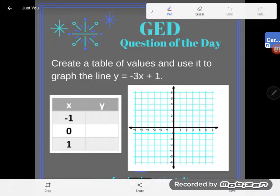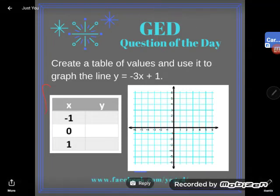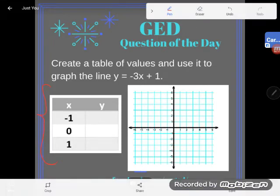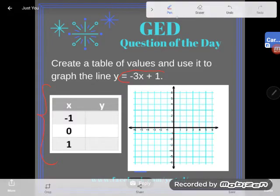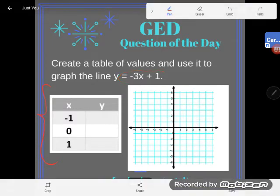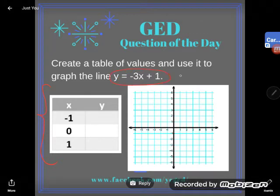It says create a table of values. This is a table of values and use it to graph a line. Y equals negative 3X plus 1. So I hope that you notice, even if lines freak you out, that you've been given an equation. Look at that, an equation.